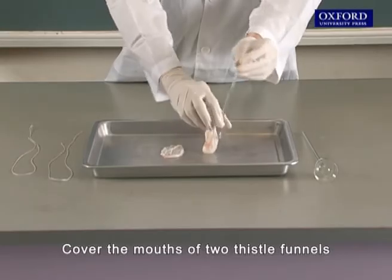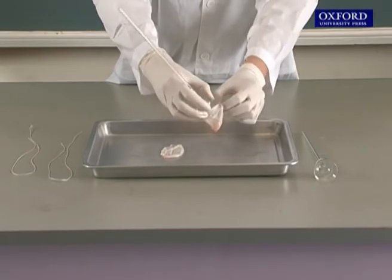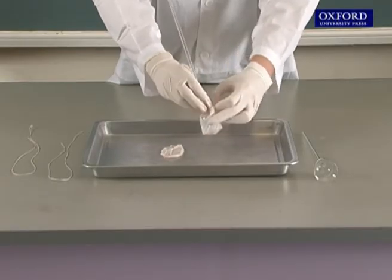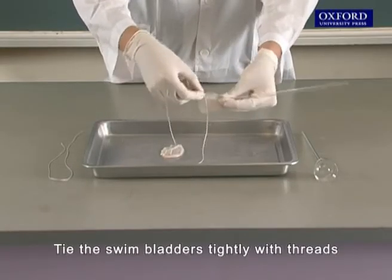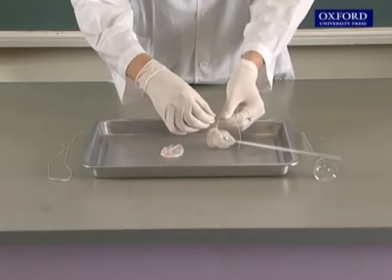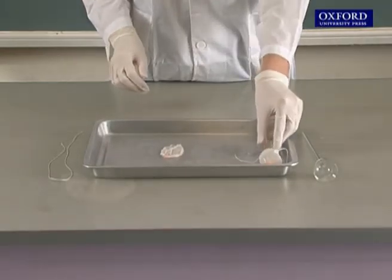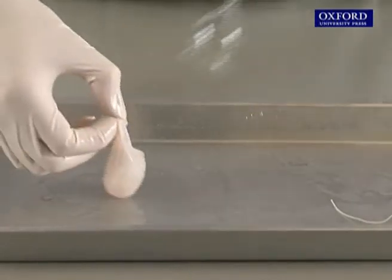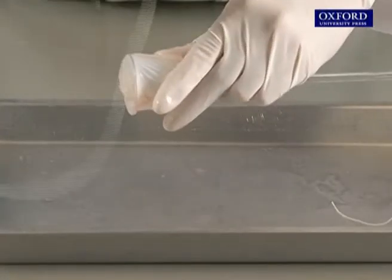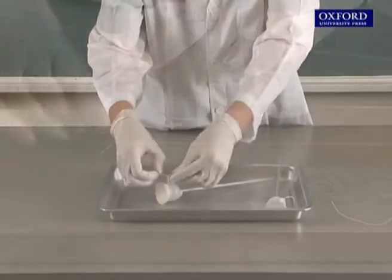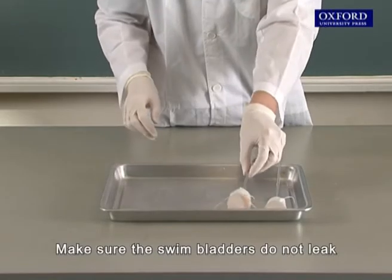Cover the mouths of two thistle funnels with two pieces of fresh swim bladder of fish. Tie the swim bladders tightly with threads. Make sure the swim bladders do not leak.